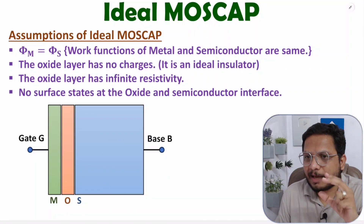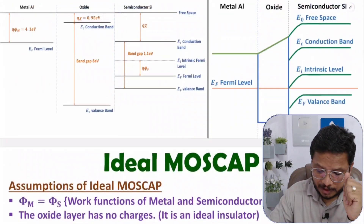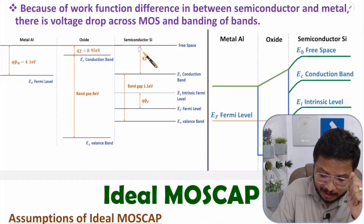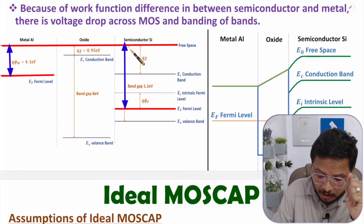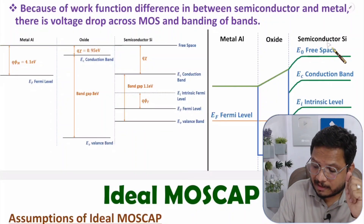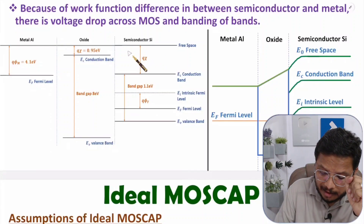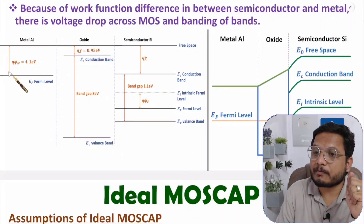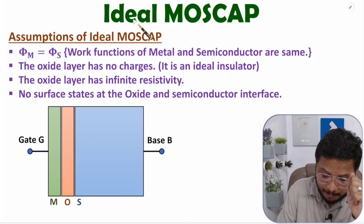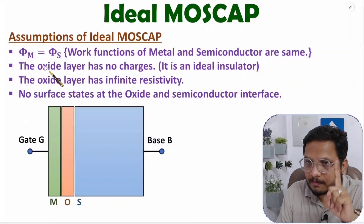In my last video on practical MOS cap, there was a difference — the work function of metal was this much and the work function of semiconductor was this much. Based on that difference, I explained that there will be bending of the energy band in the semiconductor, because the semiconductor had a higher work function compared to the metal. But in ideal MOS cap, the work function of metal and semiconductor should be equal. That is the first assumption.